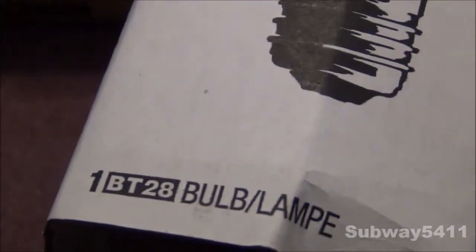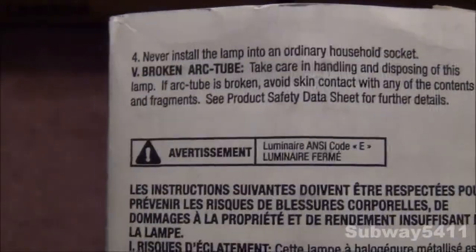One BT 28 bulb, so it's probably just the same size as 175 watt mercury vapor lamp. There's some just safety stuff on the side. So the box is pretty much just safety information pretty much so anyway.